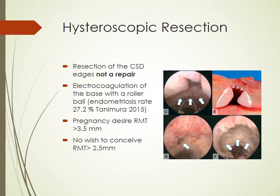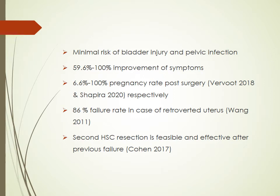If the patient requires future pregnancy, at least a residual myometrial thickness of more than 5mm is needed before hysteroscopic resection, as values around 3.5mm still fall within the gray zone requiring additional post-operative investigations. Hysteroscopy is associated with minimal risk of bladder injury and pelvic infection, 59.6% to 100% improvement of symptoms, 6.6% to 100% pregnancy rate post-surgery, and importantly, an 86% failure rate in cases of a retroverted uterus.